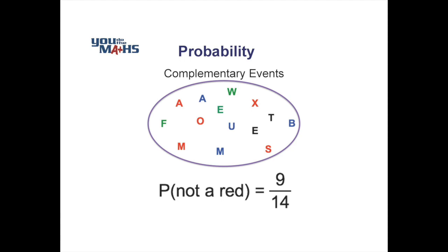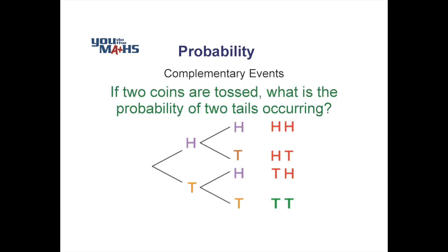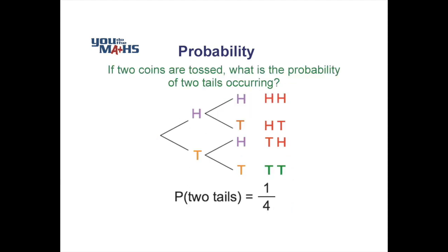Let's look at another example by tossing two coins. We'll use a tree diagram showing all possible outcomes for throwing two coins. The final column lists those outcomes: two heads, a head and a tail, a tail and a head, and two tails. The probability of two tails occurring is clearly one case out of a total of four. That's pretty straightforward.